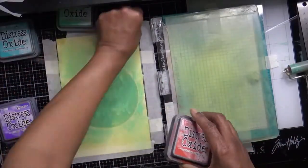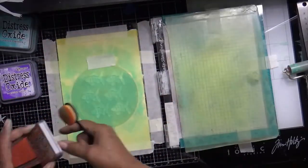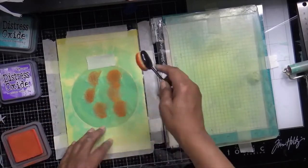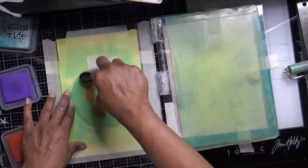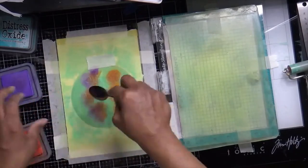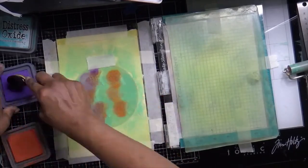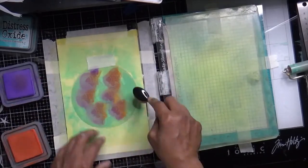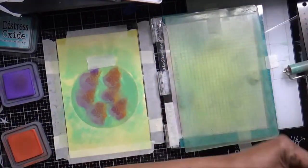Now I'm putting my circle stencil inside. And I'm going to be coloring these fish multiple colors starting with Crackling Campfire Oxide ink. I'm just putting that in the center of the fish and making their faces purple. This is Wilted Violet.